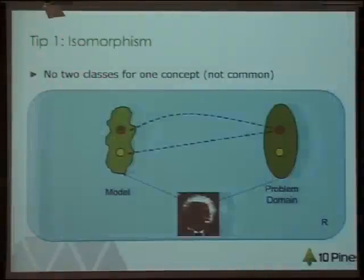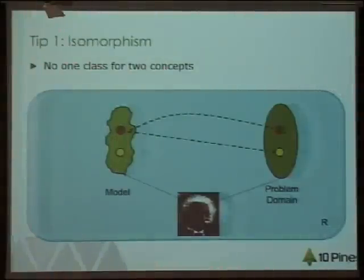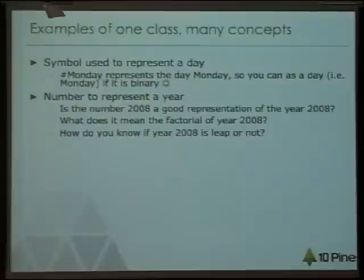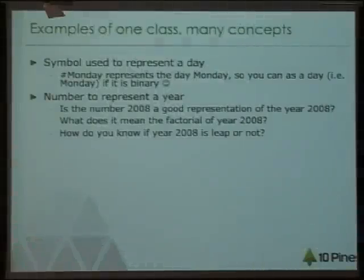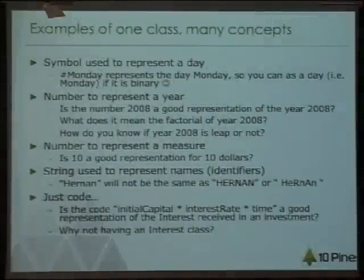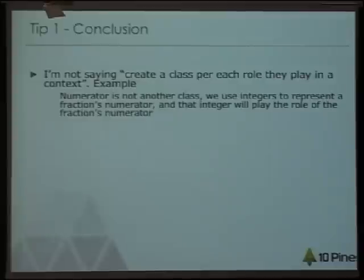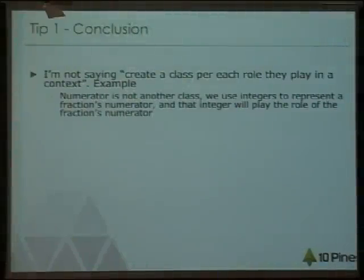So: no two classes to represent the same concept. We usually have the other problem — one class representing more than one concept. For example, symbols are used to represent days in Smalltalk-80. Numbers represent a lot of things: years, amounts of money, anything. Strings are used to represent things that have meaning beyond being strings. I'm not saying you have to create a class for each role an object can have in a special context. I'm saying we should have classes for each important concept to represent in your model, and that will make your design clearer and simpler.